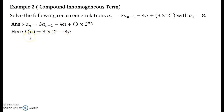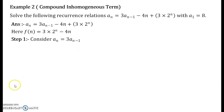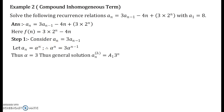Now we go for solving the homogeneous recurrence relation: a_n equals 3·a_{n-1}. Let a_n equal α^n. Therefore α^n equals 3·α^{n-1}. When you solve, you get α equals 3, and the general solution for the homogeneous recurrence relation will be a_n^(h) equals A·3^n. So that is done.